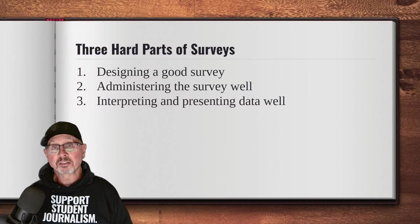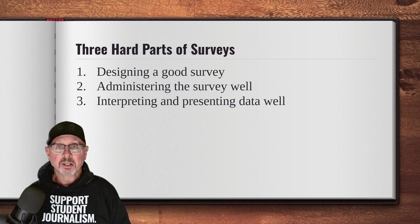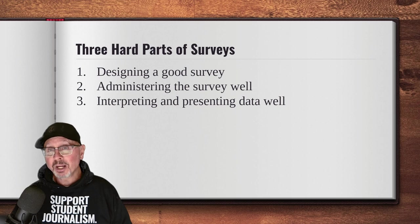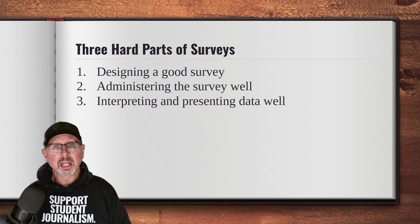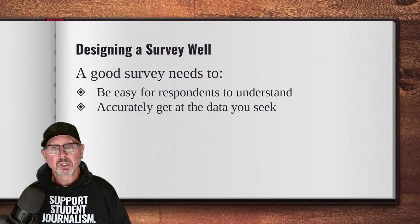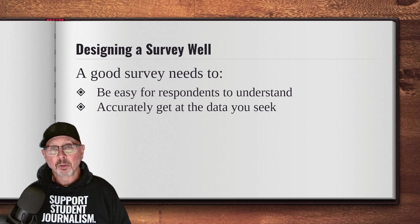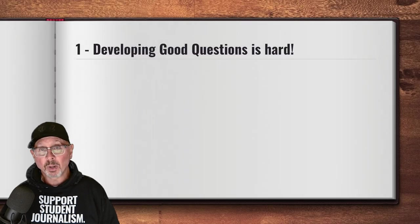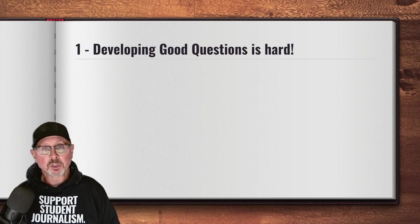The good news is that student journalists can use surveys effectively. The bad news is that it's really hard to do it well when you care about the facts. There are three hard parts to surveys: designing a good survey, administering the survey well, and interpreting and presenting the data well. Two key parts of designing a good survey are making it easy for people to understand and accurately getting at the data you seek — those are tied to developing good questions. You might think that developing questions is an easy part of using surveys. That would be wrong.